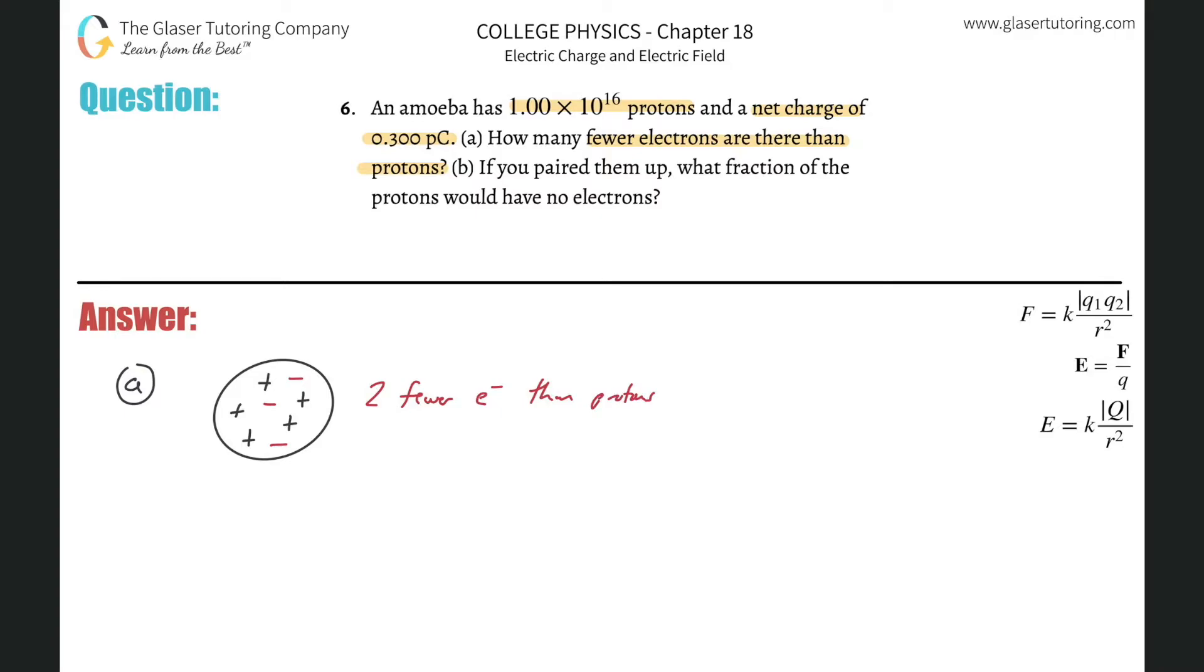Let me ask you another question. How many more protons are there than electrons? Well, there's two more, right? Two more protons than electrons. So these are literally saying the same thing, right? Two fewer electrons than protons would be literally the same question as how many more protons are there than electrons.